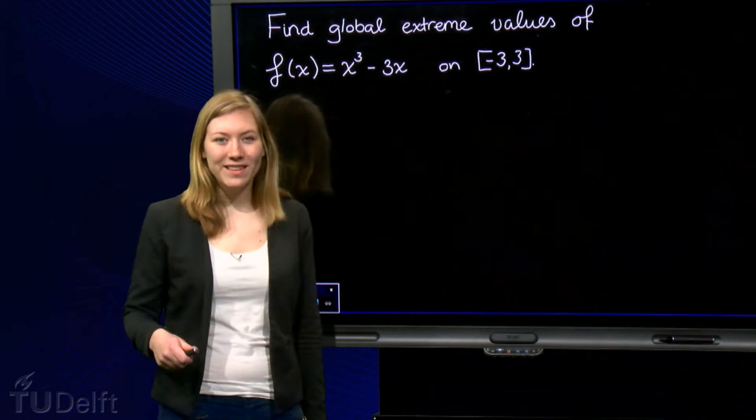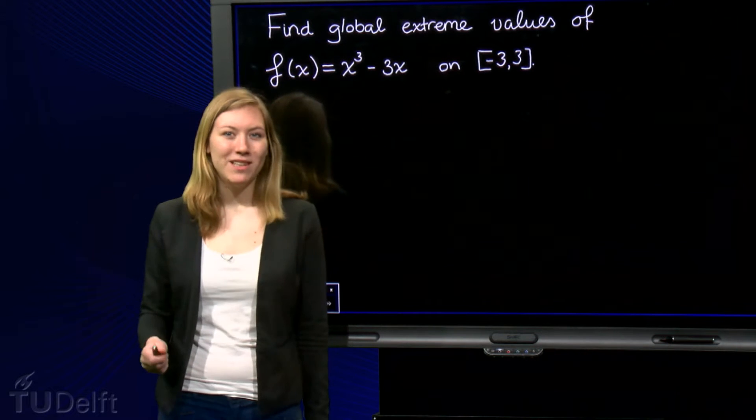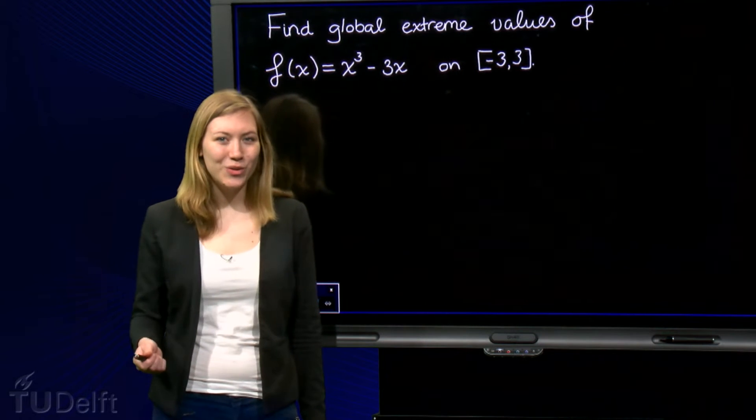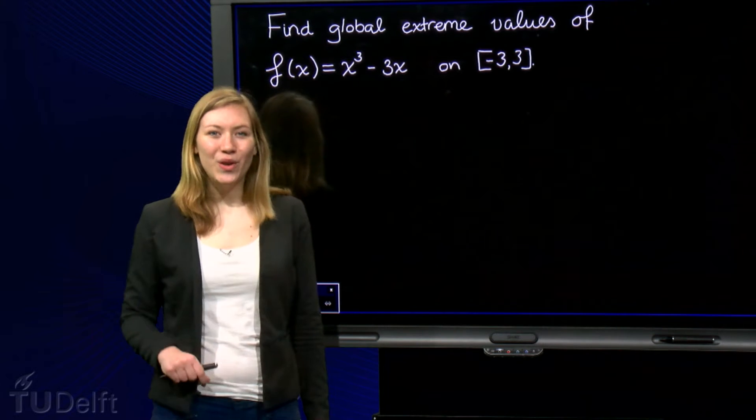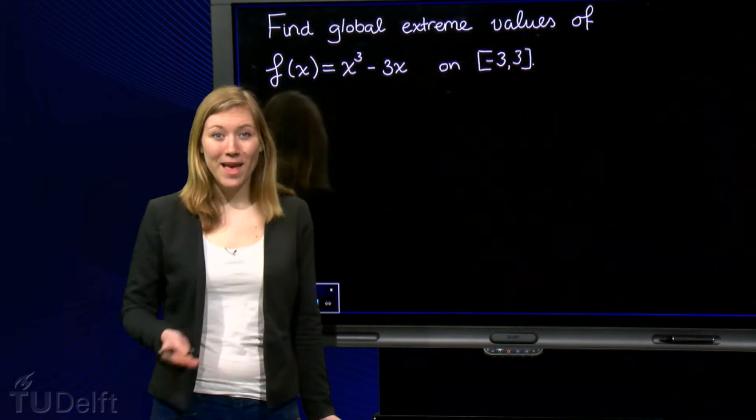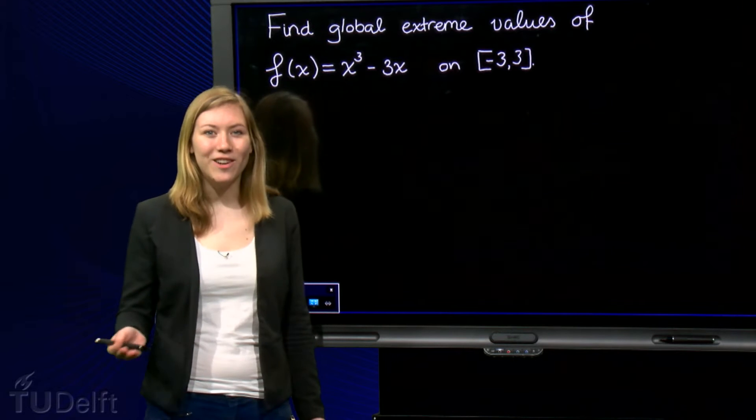Consider the function f equal to x cubed minus 3x on the closed interval from minus 3 to 3. On this interval, the function has a global minimum and maximum value, what are they?